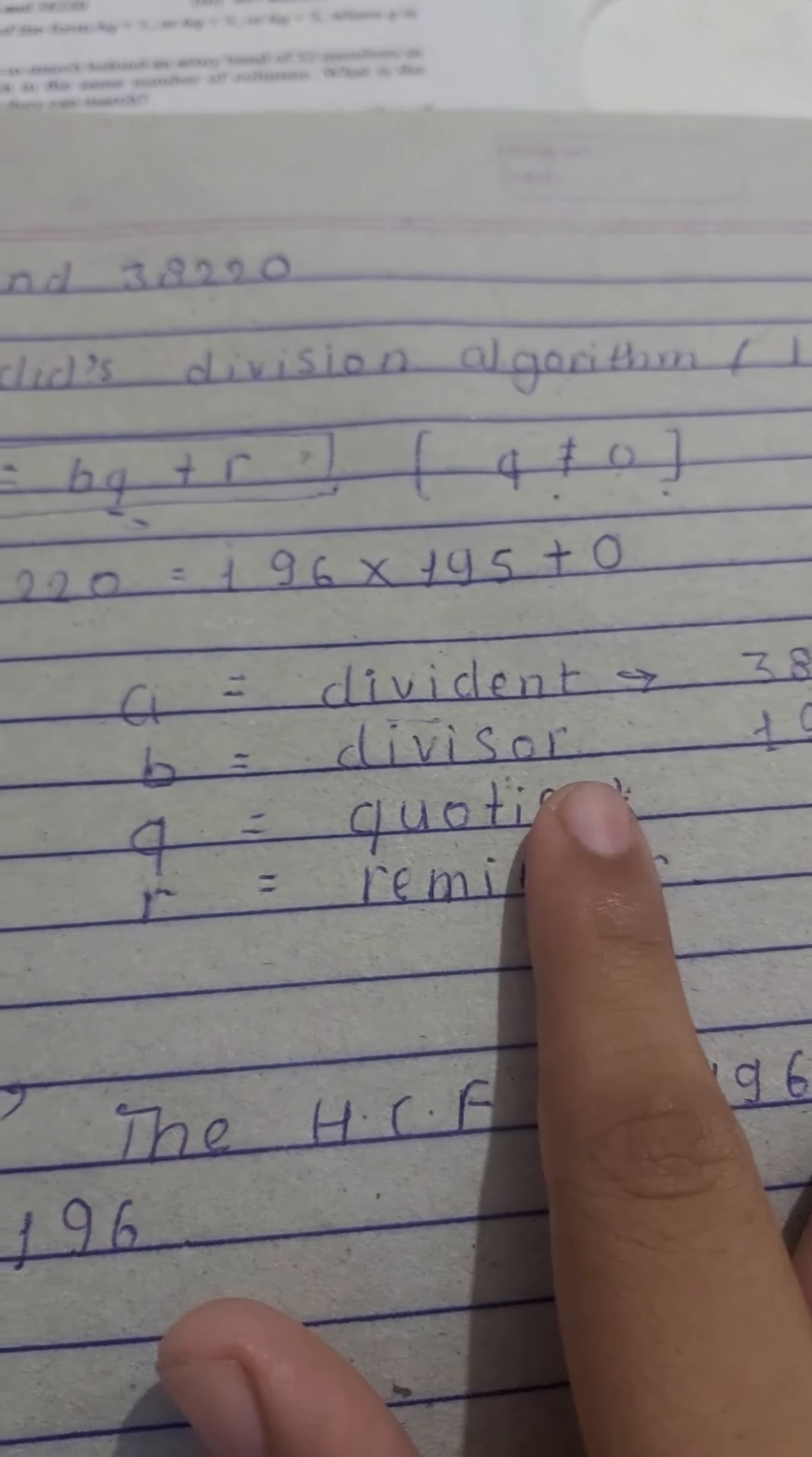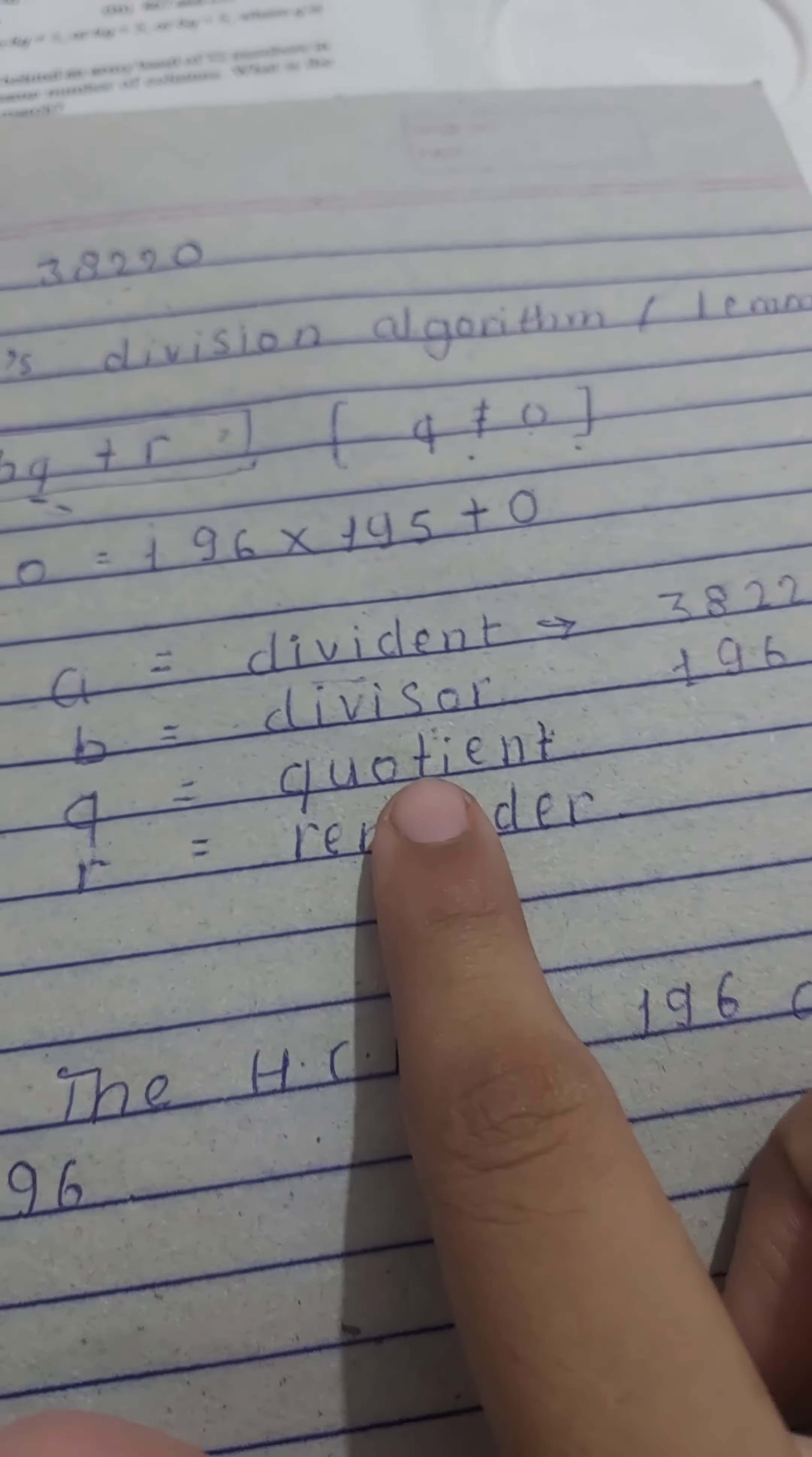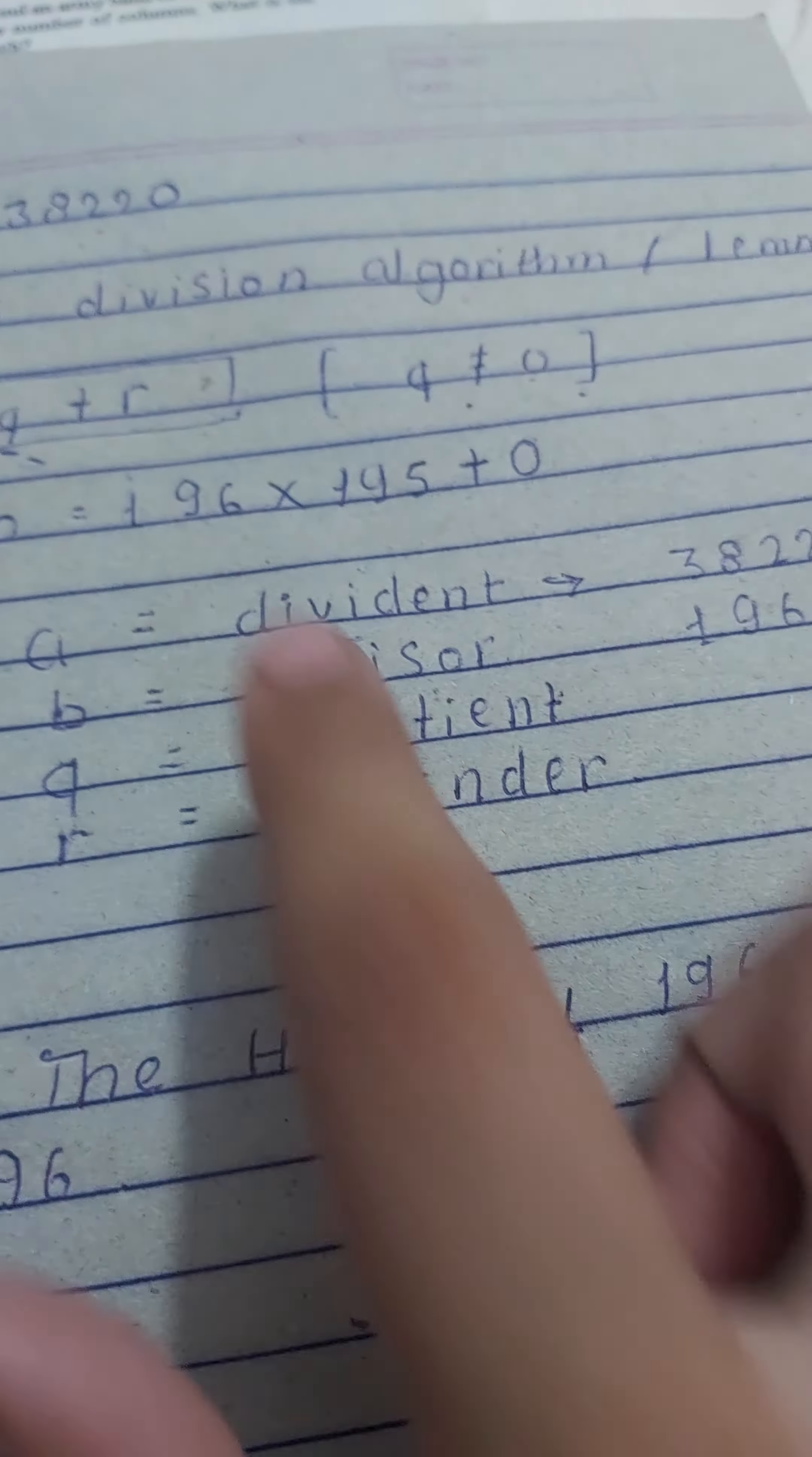Where a equals the dividend, b equals the divisor, q equals the quotient, and r equals the remainder. Here we're given dividend 38220 and divisor 196, so we can solve this problem.